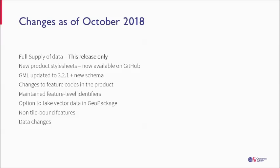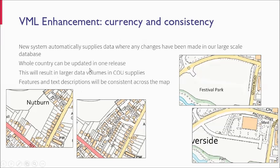We've now put in maintained feature level identifiers which allow you to do things like track change over time. We've got the options for vector data in GeoPackage, non-tile bound features and data changes which I'm going to go into more detail on in the next couple of slides. The main enhancements we've been aiming for with this update are currency and consistency. The fact the data is now automatically produced means that all the features are represented in a consistent way — individual feature types are all handled the same and will now be updated as soon as the data is present in our large-scale databases. We're really hoping you will see a marked increase in currency from this data onwards. You'll see examples like whole housing estates appearing or industrial parks, but the data as you've seen in October is as it sits in our large-scale databases.